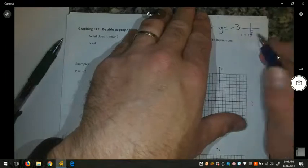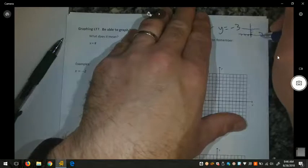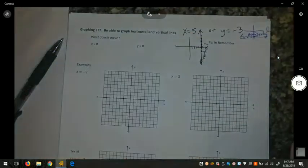The x could be negative 1, or negative 7, or positive 10, but the y-coordinate will always be negative 3. This results in a horizontal line. So that's what it means.